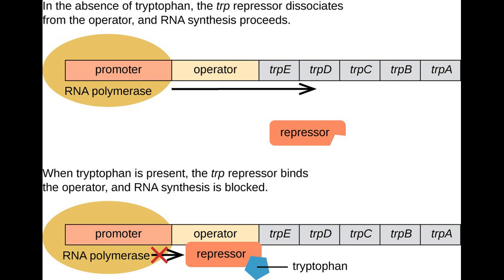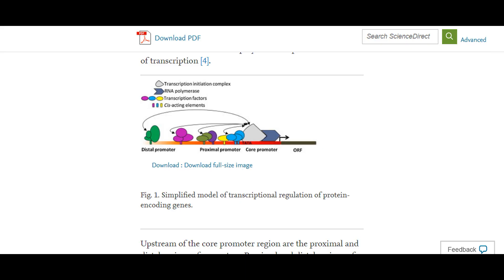The regulatory elements discussed so far are the minimal requirements for transcription. Additional elements determine the rate of transcription. Most of these occur further upstream of the promoter, the proximal and distal control elements. The proximal elements are located close to the promoter, while distal control elements may be many thousands of base pairs further removed.